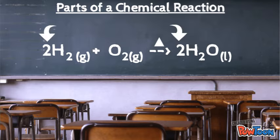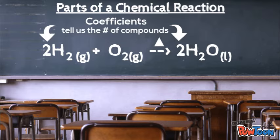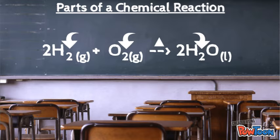These numbers in front of the molecules are called coefficients. Coefficients tell us the number of compounds. So here we have two hydrogen compounds and two water molecules. The smaller numbers towards the bottom are called subscripts. They tell us the number of each atom for each element.